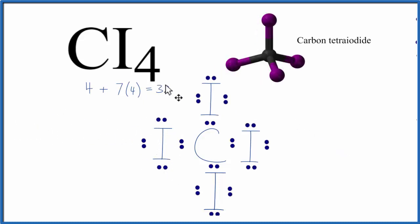So we've now used all 32 valence electrons. The carbon has 8 valence electrons. And then each iodine, by sharing with the carbon, has 8 valence electrons.